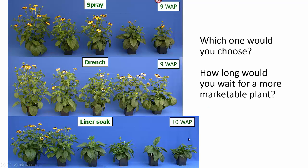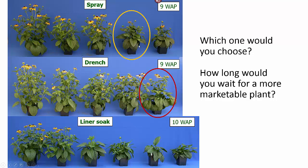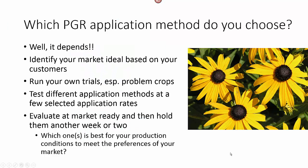What if we look at these together? Which one would you choose? Which one would you like to be marketing, and how long would you wait for a more marketable plant? Personally, this is my favorite — I really like the way all those leaves are on the bottom of the plant and the flowers stand up above it. But maybe this one's going to be better if you give it another week, or maybe when that one flowers out it's going to be the perfect size. Remember, these are in quart pots.